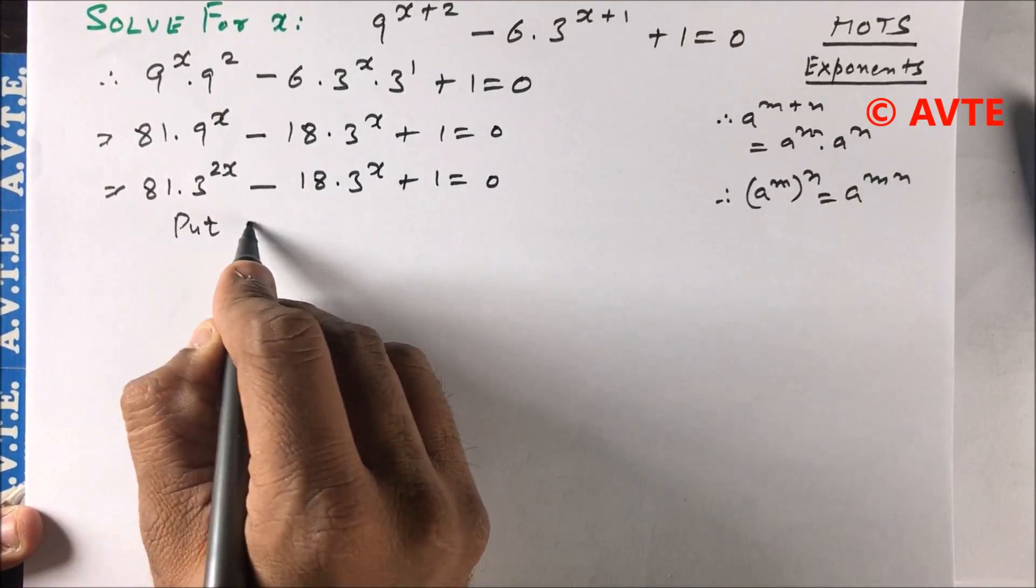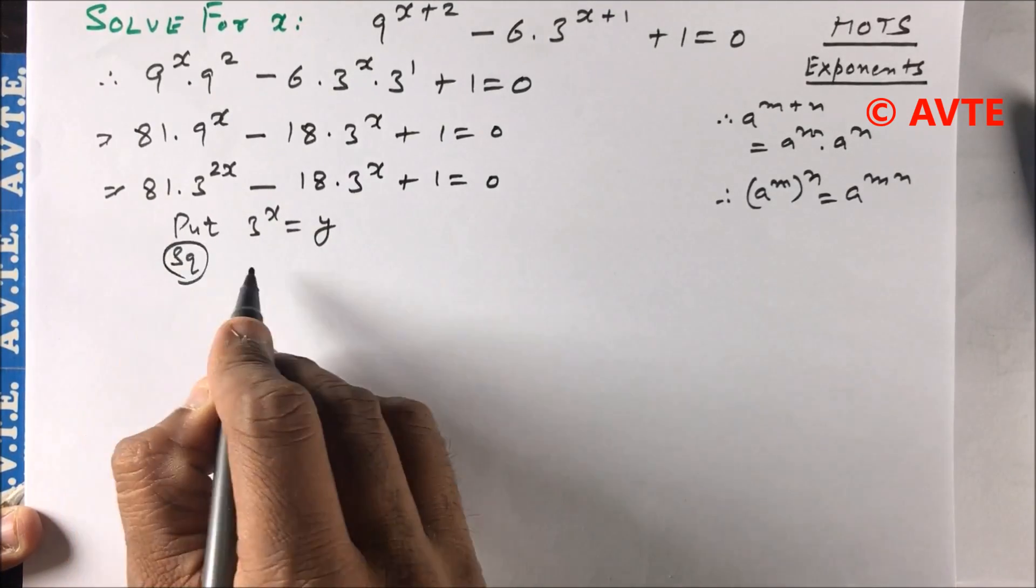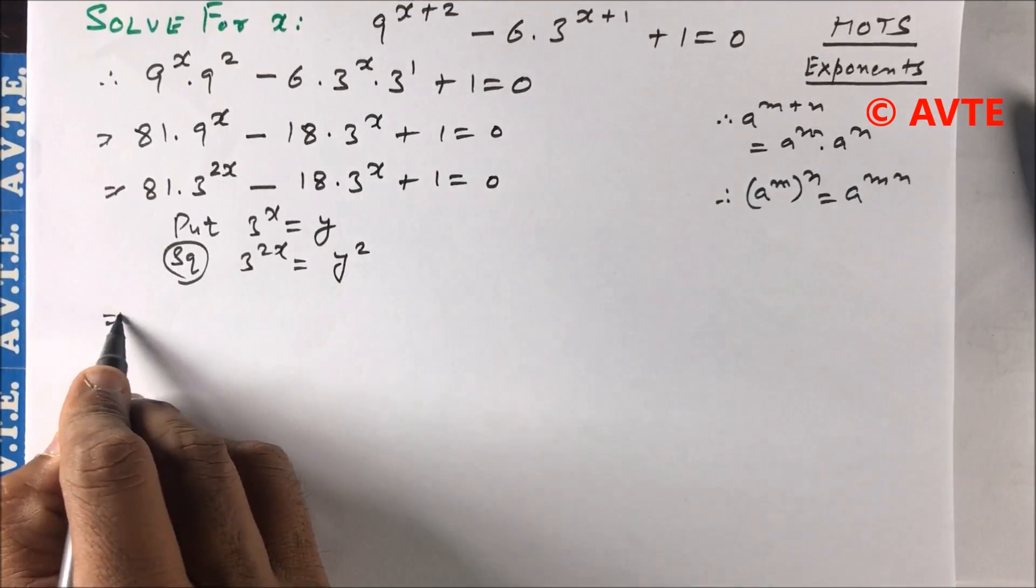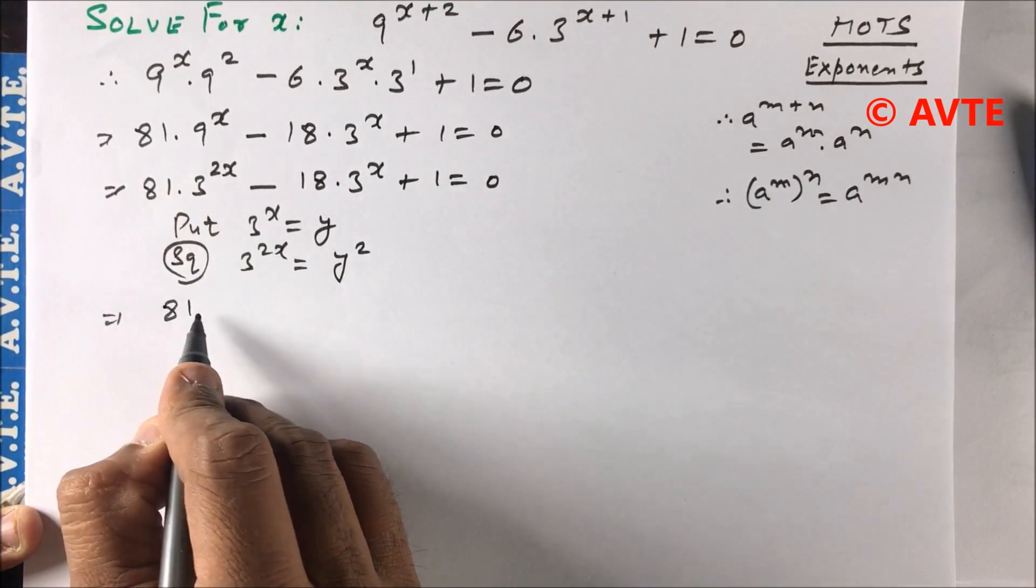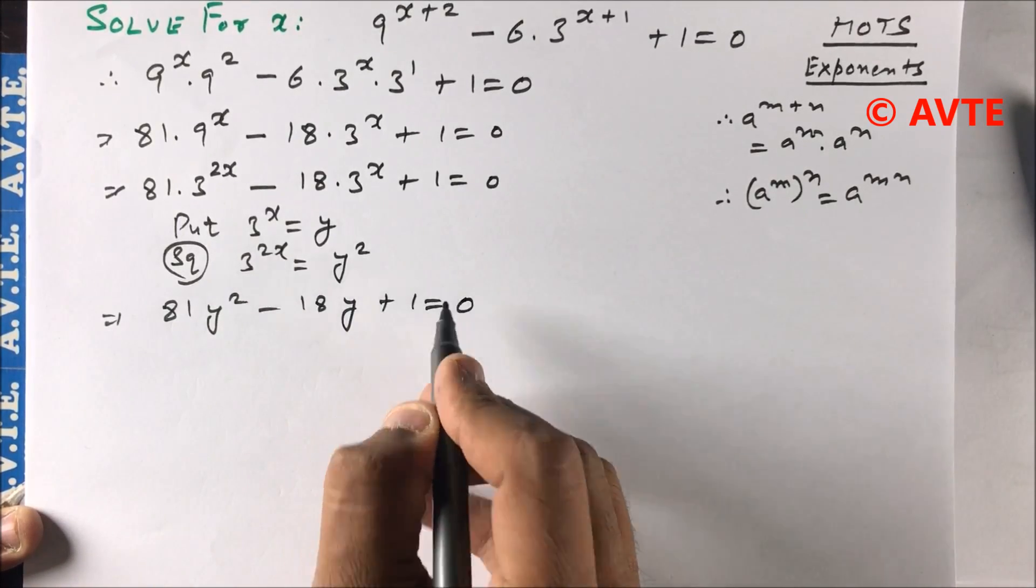Now we put 3^x = y. So 3^(2x) = y². This gives us 81y² - 18y + 1 = 0.